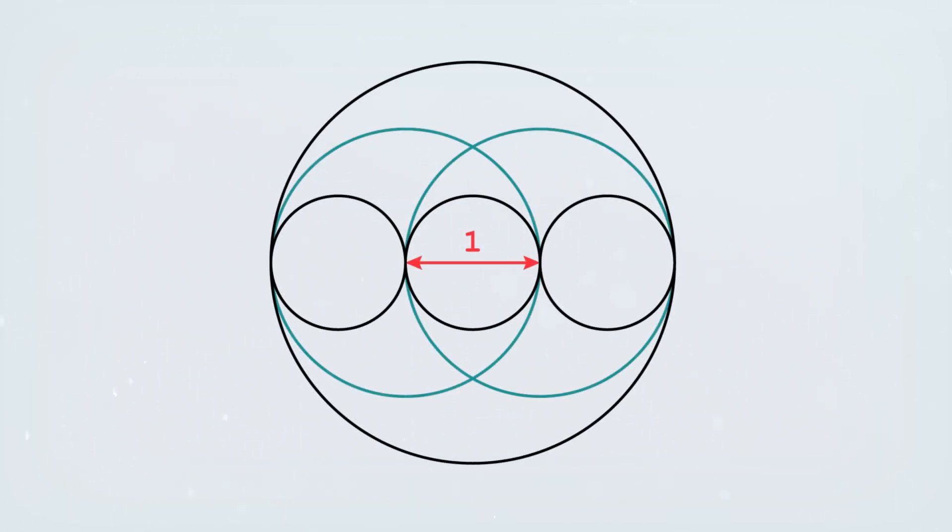So you'll notice here that our center circle has a diameter of one and on either side of it we have two circles of the same diameter. So that basically means that our shape has an overall width of three and so we can put a circle around that with a diameter of three. It encompasses the entire shape.